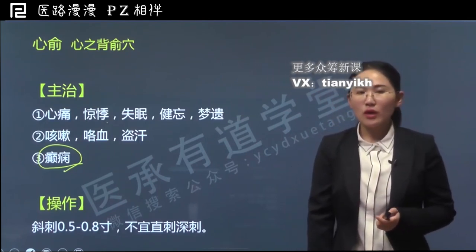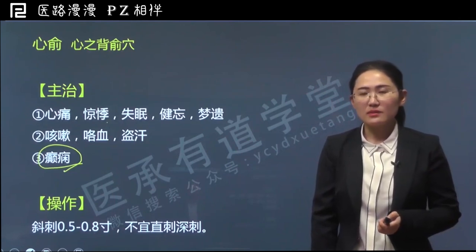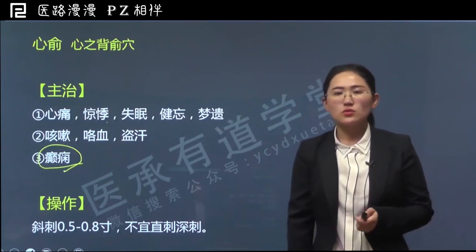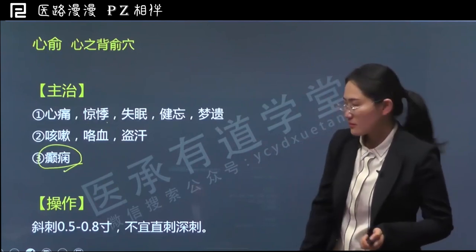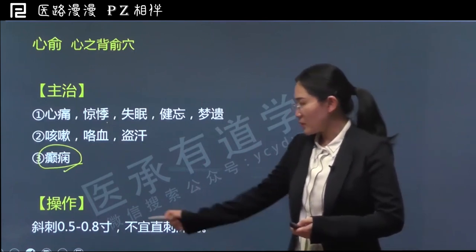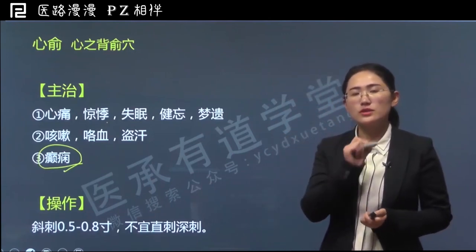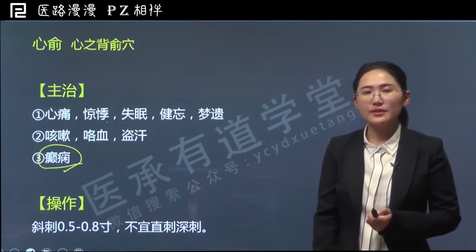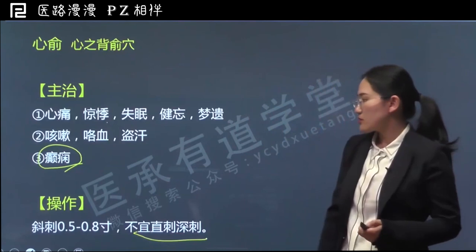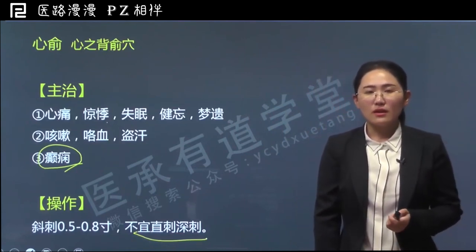以上就是关于心俞穴的主治作用。最后关于它的操作：操作上和讲过的风门、肺俞一样，心俞也位于肺之投影区，所以操作时一定要注意角度和深度，不能刺伤肺脏。一般采用斜刺，针尖朝向脊柱方向，斜刺0.5到0.8寸，不宜直刺深刺，以保证针刺的安全性，以免伤及肺脏。